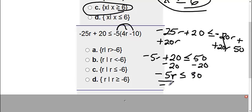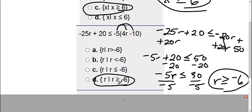And lastly, I'm going to divide by negative 5. And we're not going to forget, since we are dividing by a negative number, I need to flip this sign. So when I flip it, 30 divided by negative 5, I get negative 6. We get an answer of r is greater than or equal to negative 6, which is choice d.